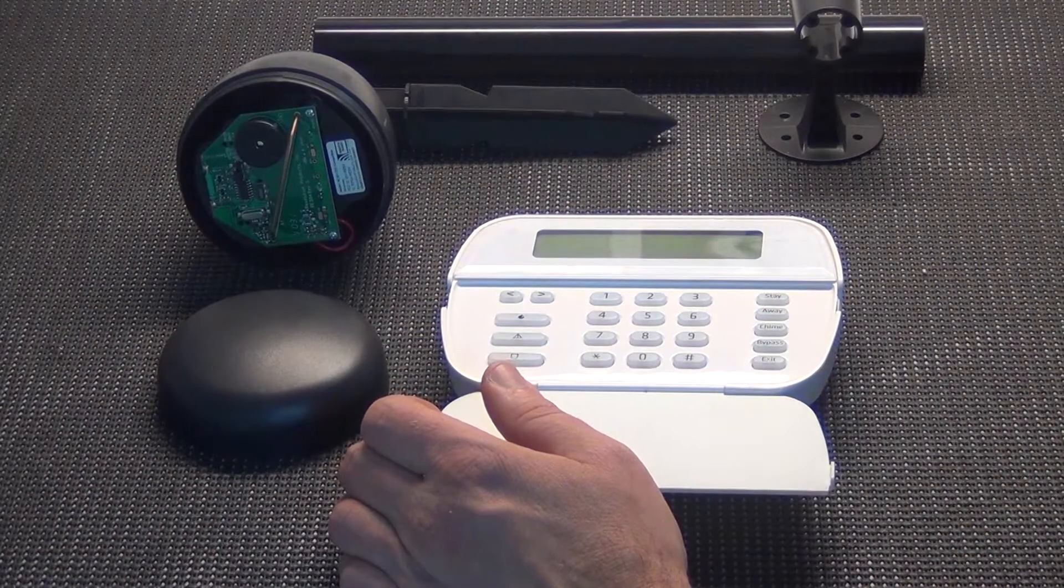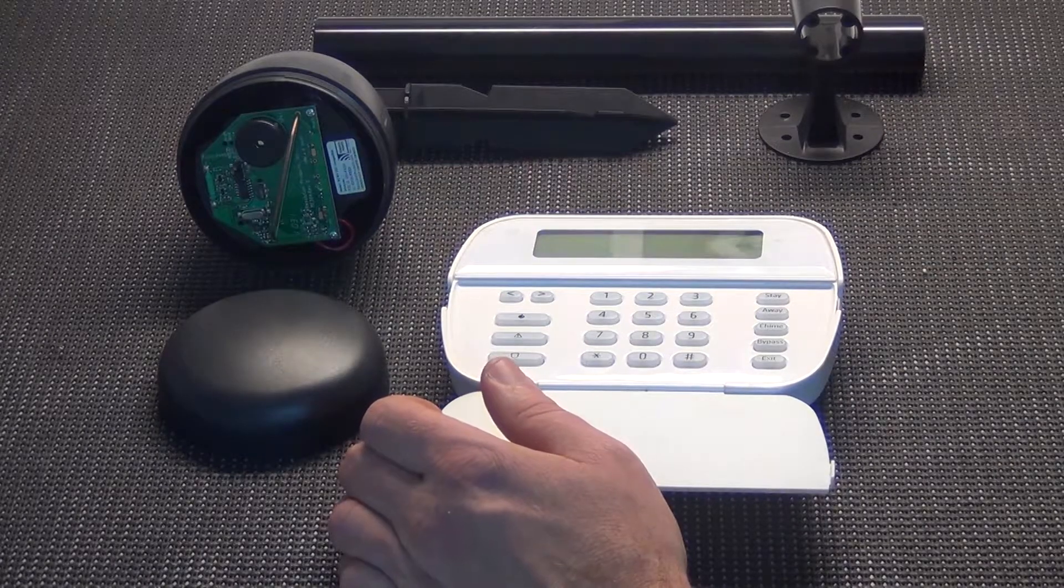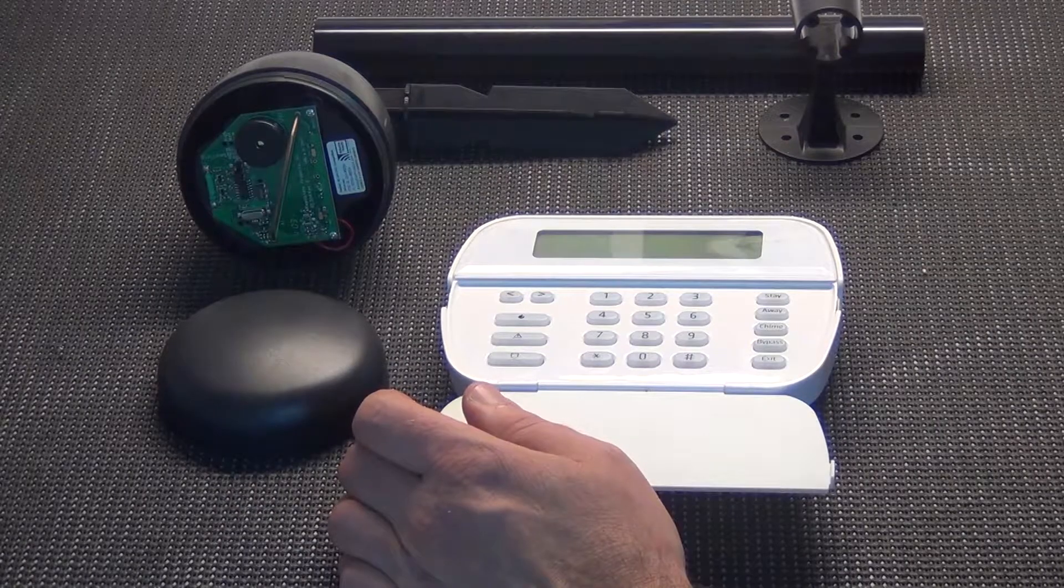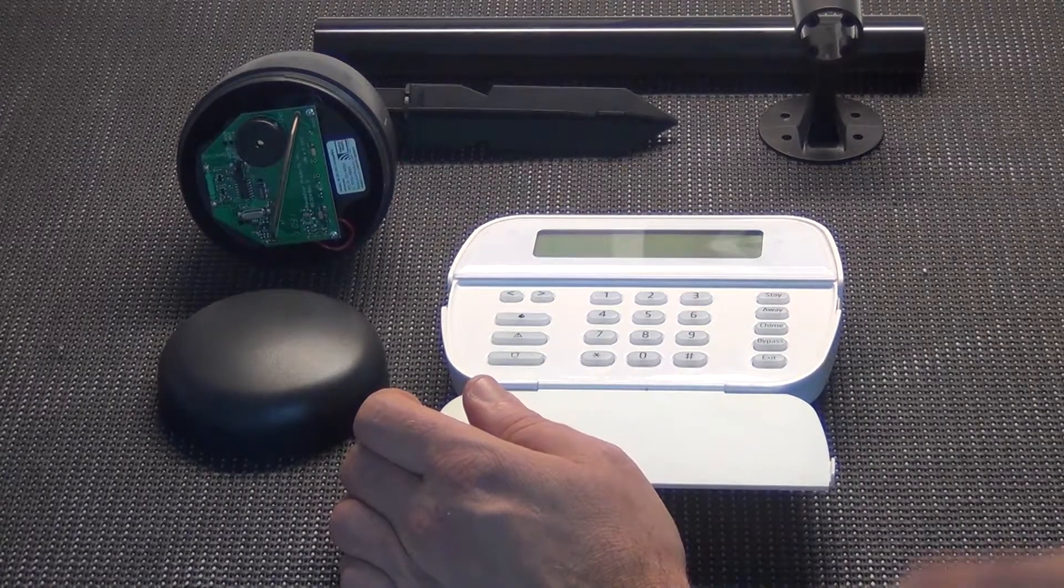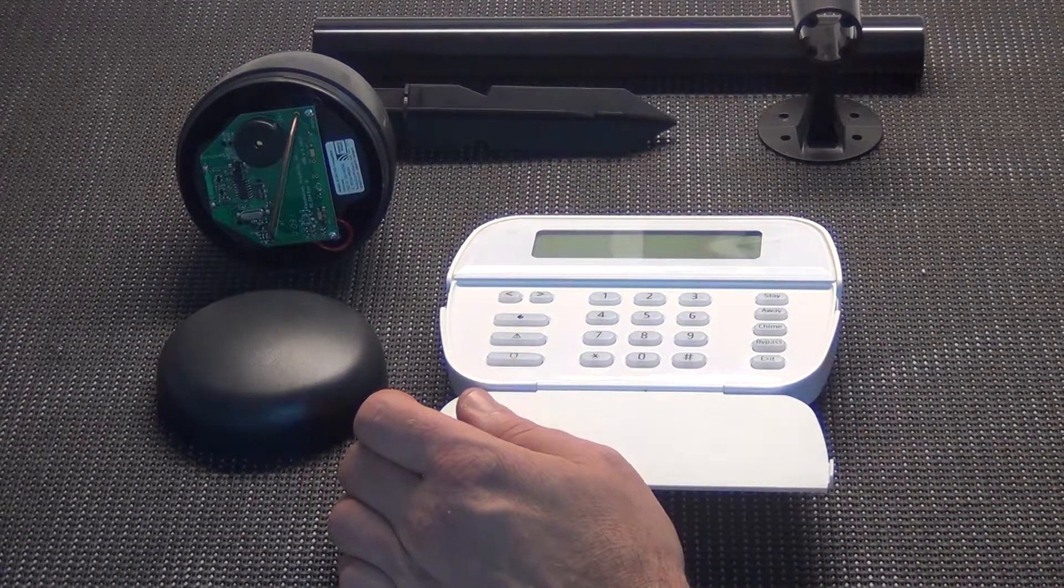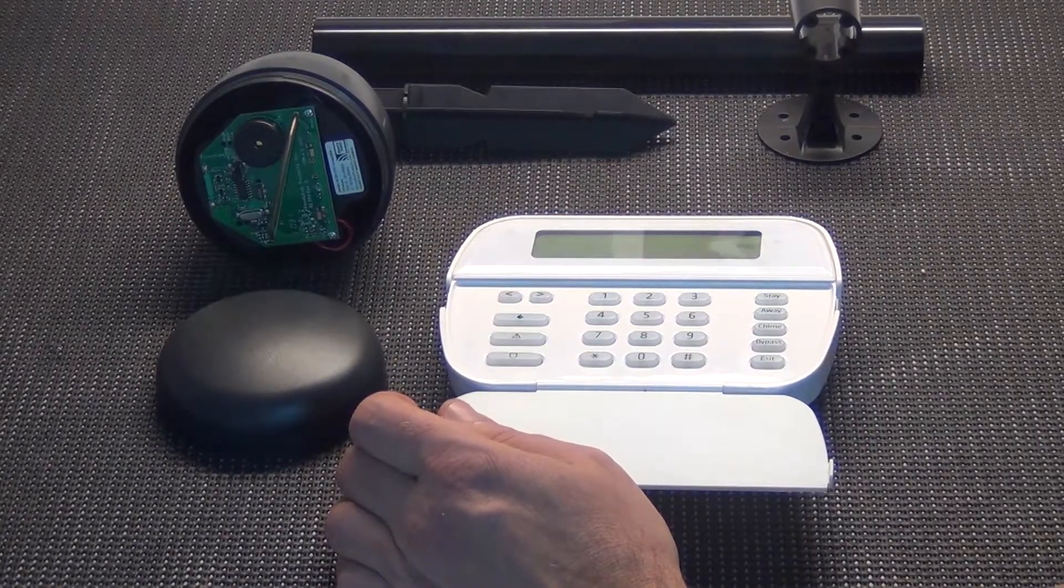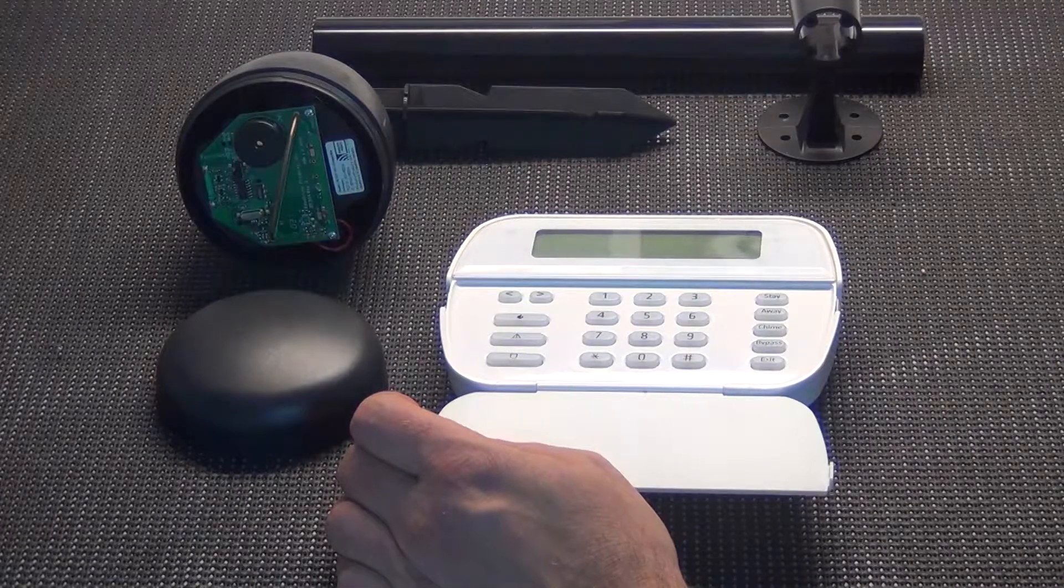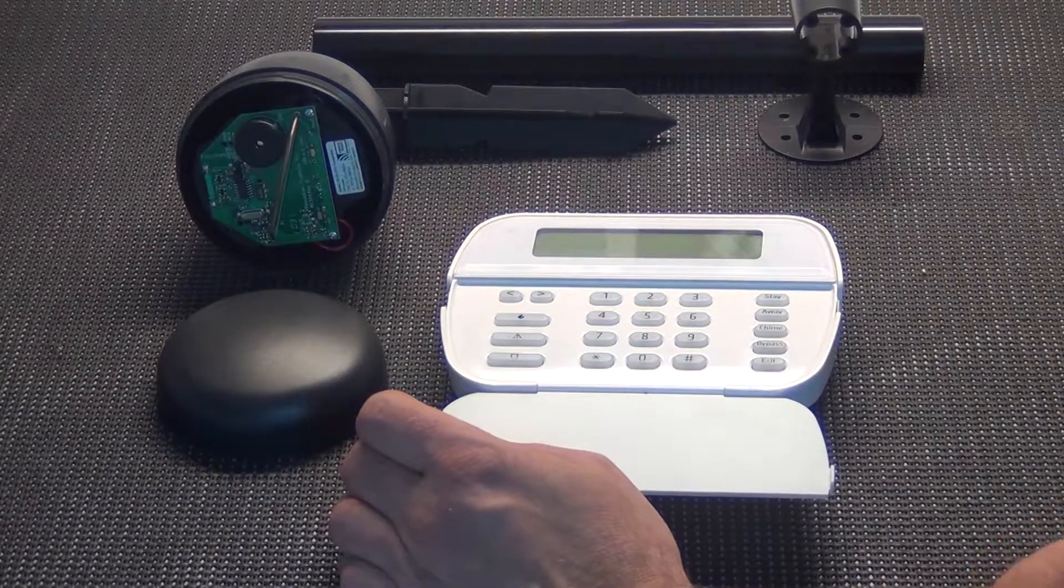Alright, here we are at the programming table and we're getting ready to enroll this Resolution Products RE304 wireless driveway alert unit into this DSC Alexor wireless system. You can use this on the DSC Alexor, DSC Impassa, or the DSC Power Series 1616, 1832, or 1864. It's basically a wireless sensor that will alert you when someone's coming up your driveway.